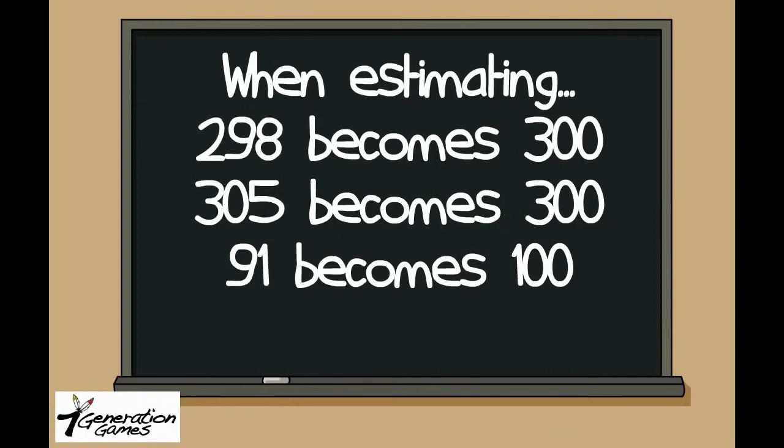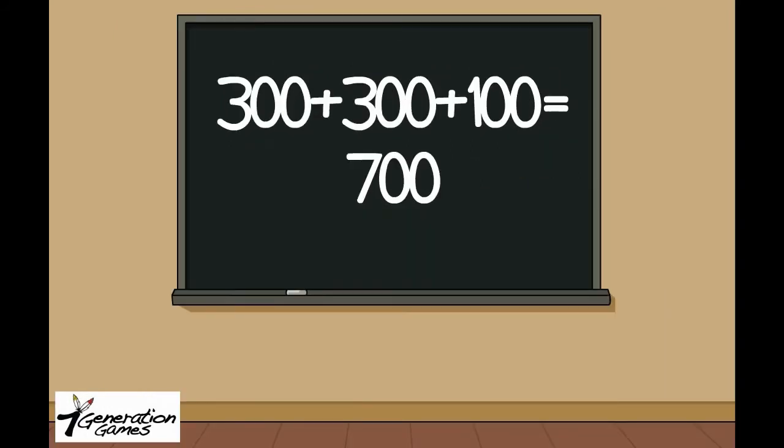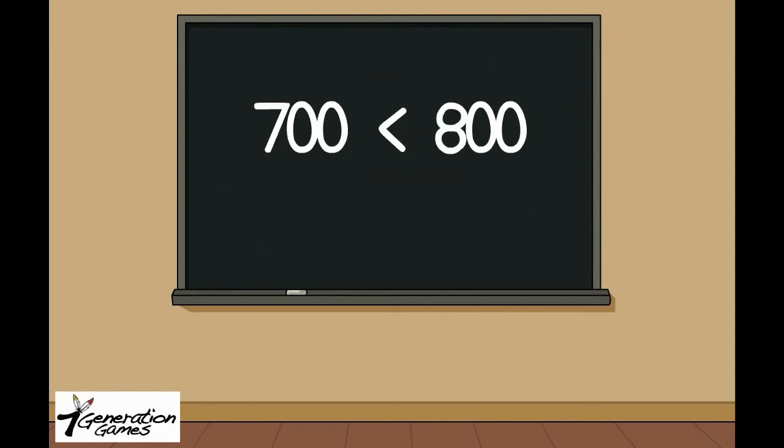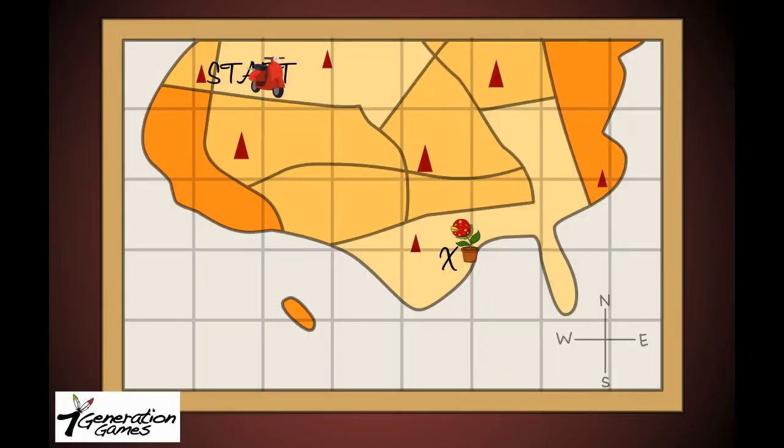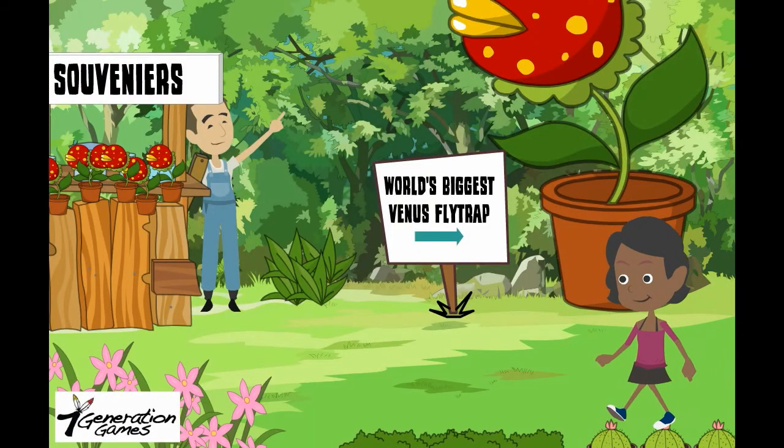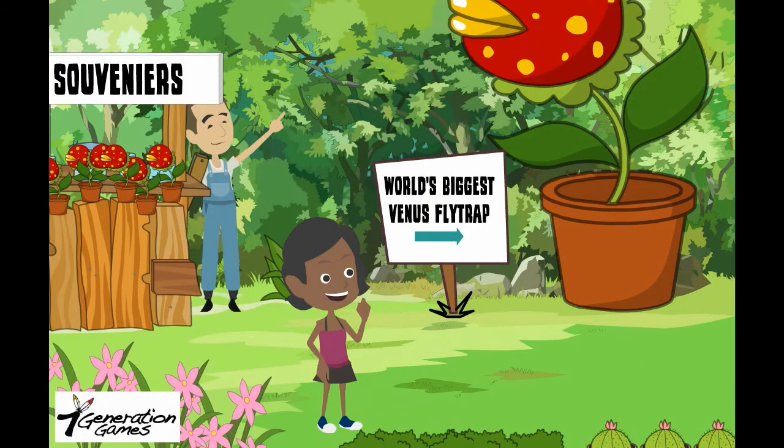If you remember, we already rounded and estimated Jenny's travel so far. She's gone about 700 miles. That means she has not gone 800 miles, so she has not passed the Venus flytrap. That's good news for Jenny. Now she gets to visit the world's largest Venus flytrap.